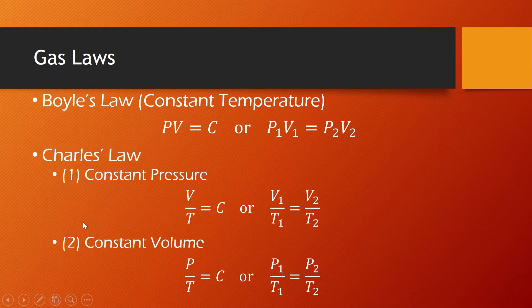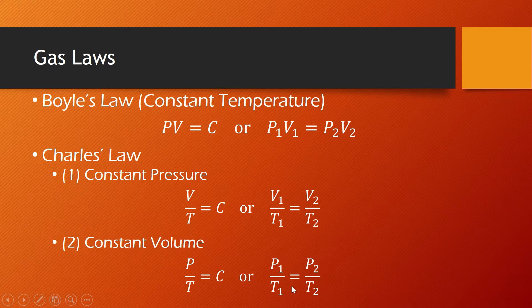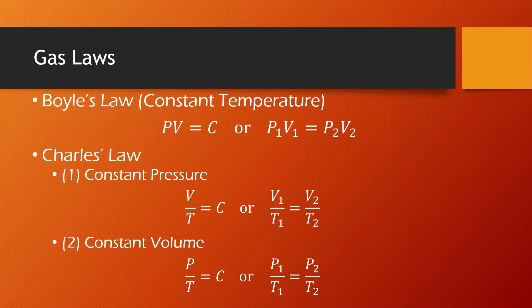And for constant volume, pressure over temperature is constant, or P1 over T1 is equal to P2 over T2. And in some cases, these laws can be combined into P1V1 over T1 equals P2V2 over T2.